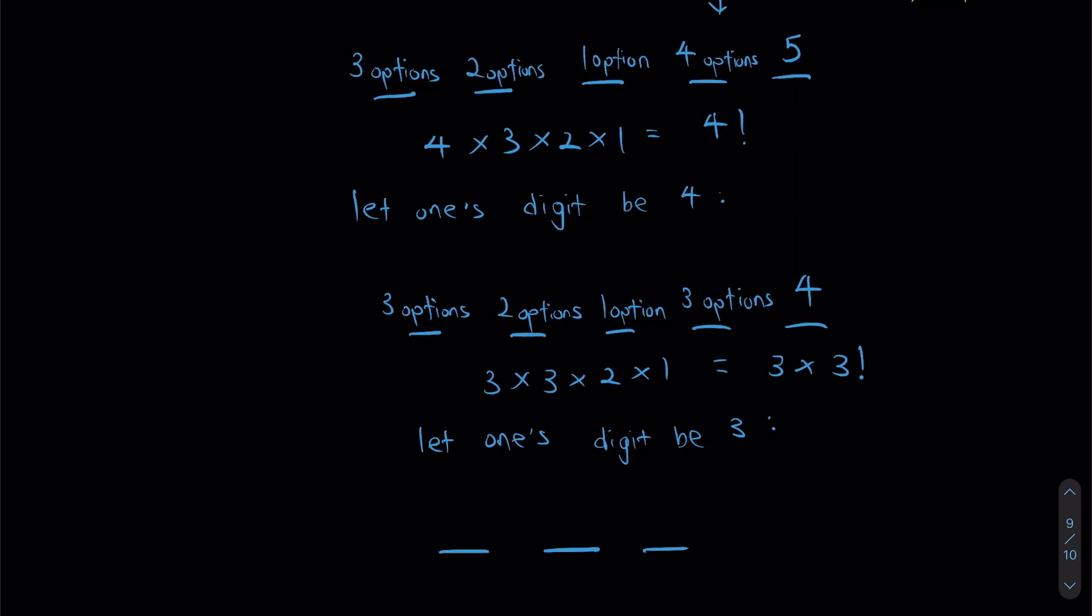I'm gonna fill in the blanks again. If this is three and my tens digit has to be less than my ones digit, how many ways can I have it? Only two ways, right? This has to be two options. And as we can imagine, our first three blocks will be exactly the same, so I'm just gonna copy paste